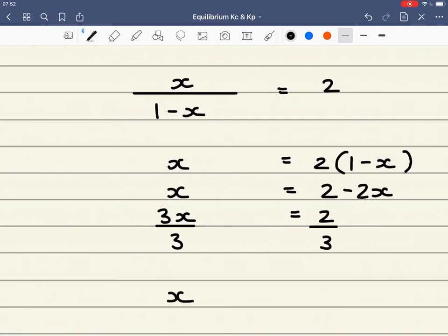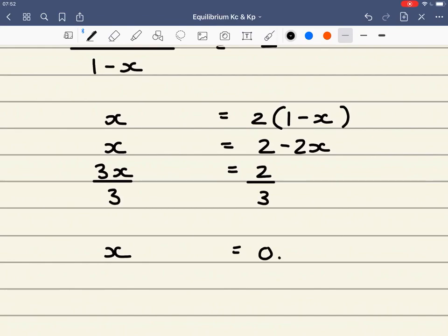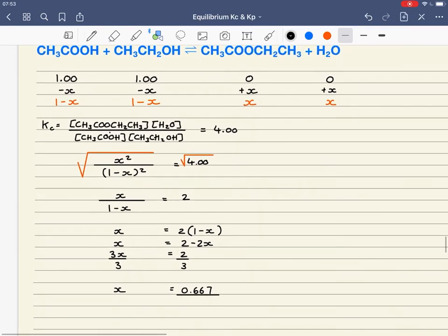And that gives me X is equal to 2 over 3, which is 0.667. And that's the number of moles of the ester at equilibrium.